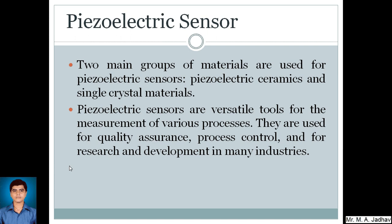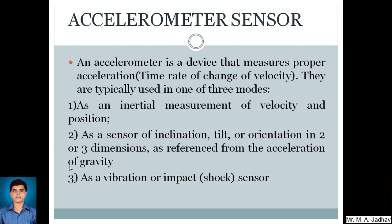The next is accelerometer sensor. An accelerometer is a device that measures proper acceleration, time rate of change of velocity. They are typically used in one of three modes: as an internal measurement of velocity and position, then as a sensor of inclination, tilt or orientation in two or three dimensions as referenced from the acceleration of gravity, and as a vibration or impact, that is shock sensor.